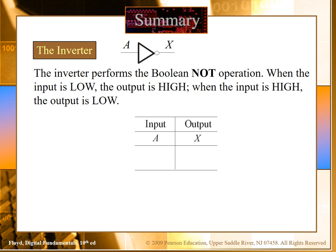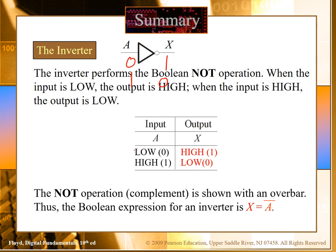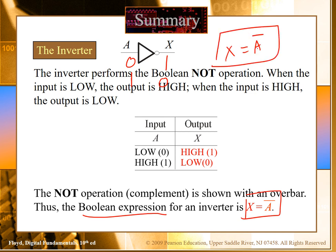Let's start with the first kind of gate, the inverter gate. The inverter basically performs the Boolean NOT operation. This is the symbolic form of the inverter. Simply, if your input is low you will get high, and if your input is high you will get low. In Boolean expression we write that the output is the invert of the input — whatever input you have, the output will be its inverse.